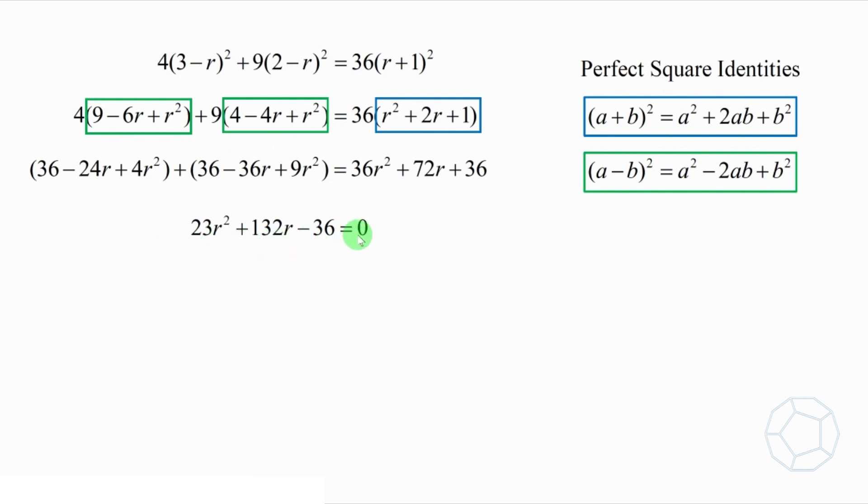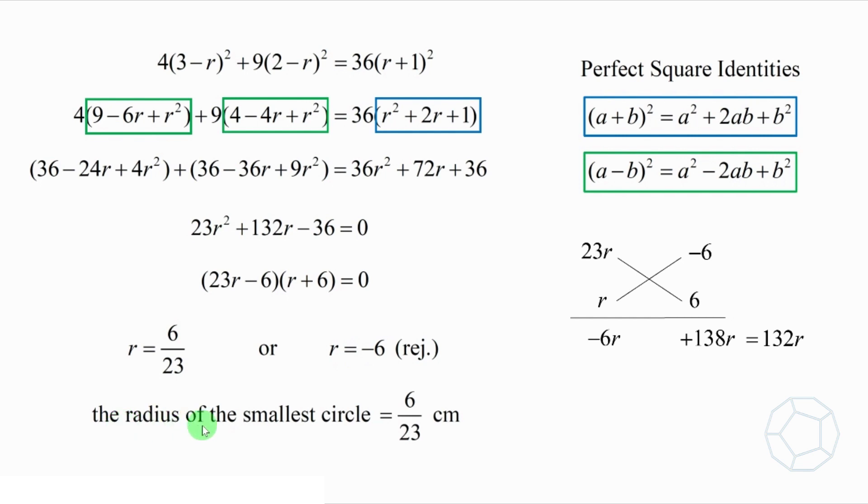Up to this point, it should not be difficult to solve. We can use cross method to factorize it. Therefore, we have 23R minus 6 times R plus 6 is equal to 0. So R is equal to 6 over 23, or R is equal to negative 6, which is rejected, because the length must be positive. Therefore, the radius of the smallest circle is equal to 6 over 23 cm.